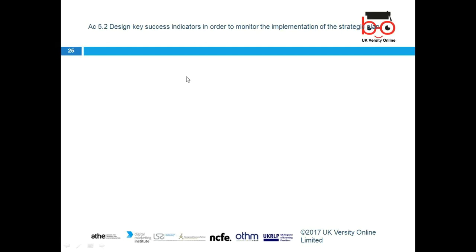For 5.1, you need to identify risk at all levels and then make strategies to minimize them and deal with them timely. Then for 5.2 — design the key success indicators in order to monitor the implementation of the strategic plan. What are the key success indicators for implementation of strategies?